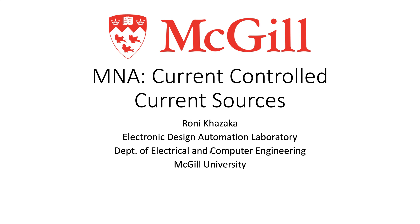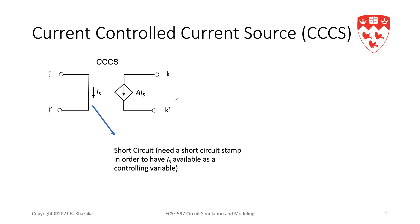In this video we are going to develop a stamp for current controlled current sources. For a current controlled current source, the value of the current source is controlled by the current in another branch in the circuit. So our controlling variable is a current, and as a result we need that current to be one of the variables in our unknown vector x.